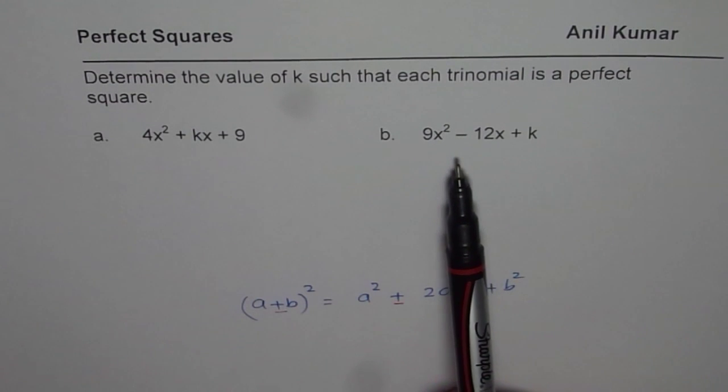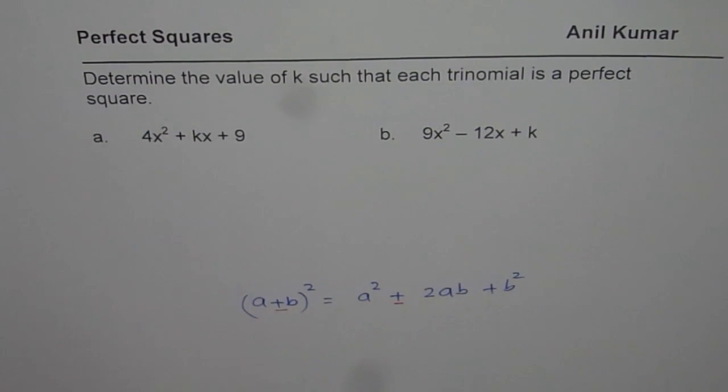So clearly, this is like (a - b)², that is (a + b)². You can pause the video, find the value of k which will make these trinomials perfect squares.